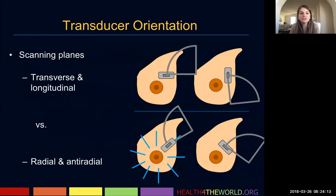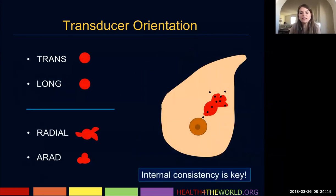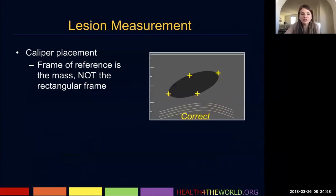When we talk about transducer orientation, in most places in the body we document in transverse and longitudinal, which is acceptable. We choose to do radial and anti-radial. Radial means pointing towards the nipple, and anti-radial means pointing away from the nipple. We do this because lesions in the breast tend to grow along the ductal systems in the radial dimension, so you tend to see the true margins and true extent of a mass better with radial and anti-radial than transverse and longitudinal — but either is acceptable.